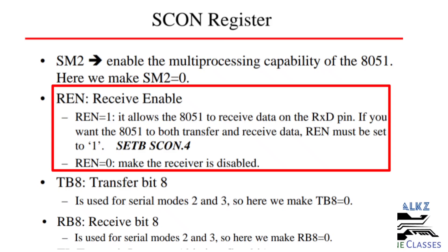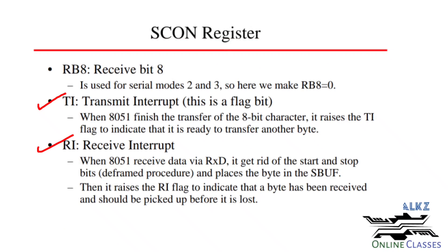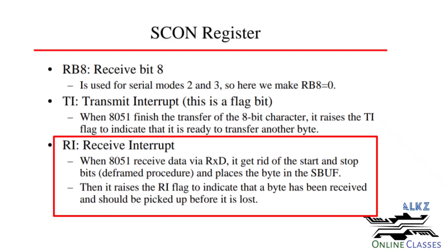The REN bit is the Receive Enable bit. When REN is 1, the 8051 can receive data. When REN is 0, the receiver is disabled. TB8 and RB8 bits are not used in Mode 1, so they are set to 0. TI and RI are the Transmit Interrupt and Receive Interrupt flags. After successful transmission, the TI flag is set. When data is received and deframed in SBUF, the Receive Interrupt flag RI is raised.